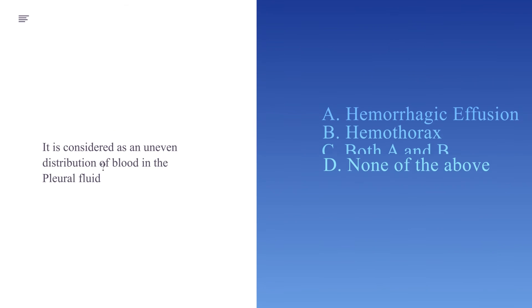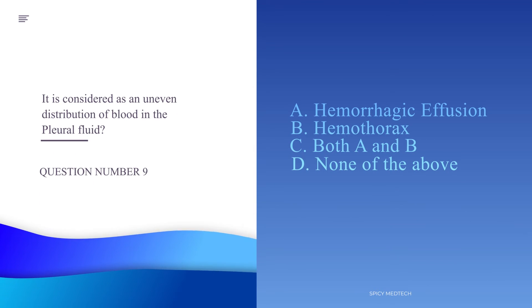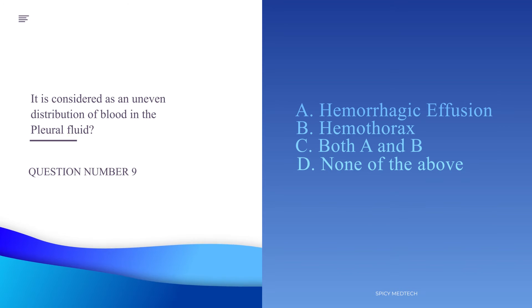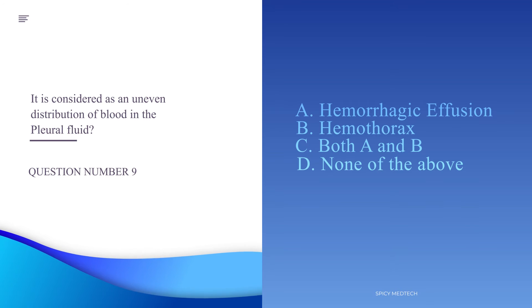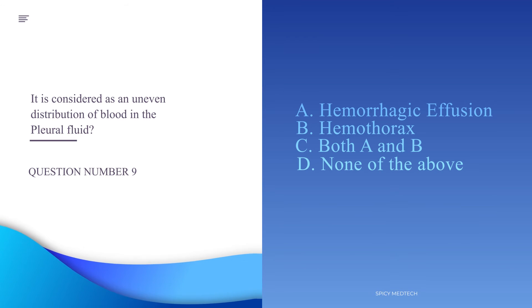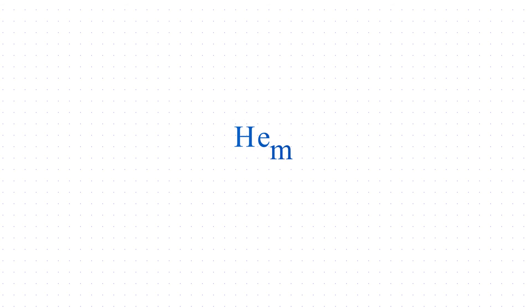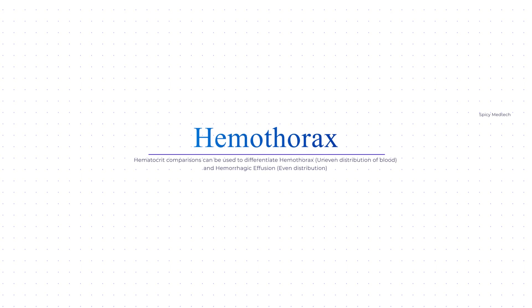Number nine: It is considered as an uneven distribution of blood in pleural fluid. A. Hemorrhagic effusion, B. Hemothorax, C. Both A and B, or D. None of the above. The answer is letter B, hemothorax, which has an uneven distribution compared to hemorrhagic effusion. To differentiate, we use hematocrit: a pleural fluid hematocrit greater than 50% of whole blood hematocrit originates from hemothorax, while hematocrit less than 50% originates from hemorrhagic effusion.